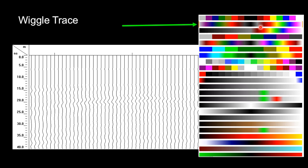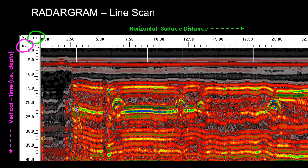The reflections are displayed as a wiggle trace recorded side by side as the antenna is pulled across the surface. The amplitudes of the waveforms are typically color coded. I use a 256 color scheme where the positive amplitudes are brighter versions of the negative amplitudes. When displayed in color they are called a line scan.